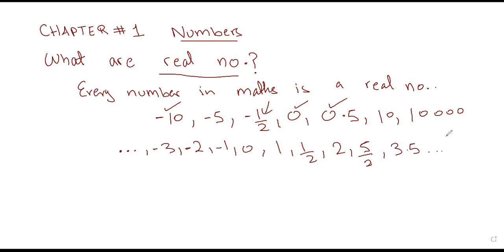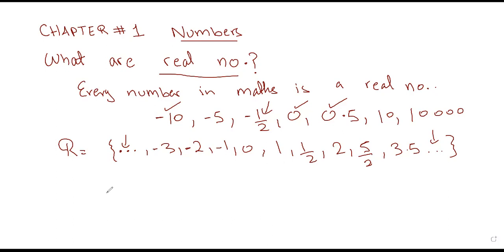Even if it is negative, even if it is zero, even if it's a fraction, even if it is a decimal number — real number is a big, big branch. In real numbers we have all the negative numbers, we have zero, we have all the positive numbers, we have fractions. We write this set as R, with three dots indicating all the negative and positive numbers in maths.